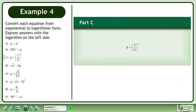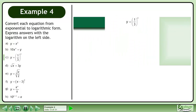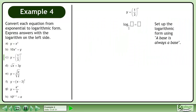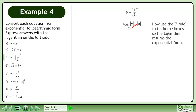In Part C, convert y equals 1 over 3 to the power of x to logarithmic form. Set up the logarithmic form using 'a base is always a base.' Now use the 7 rule to fill in the boxes so the logarithm returns the exponential form. The logarithmic form of y equals 1 over 3 to the power of x is the base 1 over 3 logarithm of y equals x.